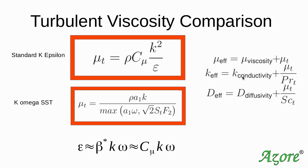Once we have the turbulent viscosity, it's useful to understand how it's used in the primary variables. The effective viscosity, effective thermal conductivity, and effective diffusivity are the values used when fundamental variables are solved within the solver. The effective viscosity is the sum of the laminar viscosity and the turbulent viscosity. For most cases, the turbulent viscosity is orders of magnitude larger than the laminar viscosity, and it almost overwhelms everything else.